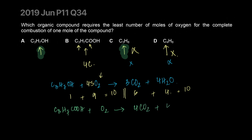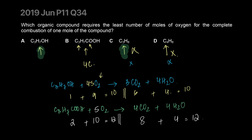Second equation: C3H7COOH produces four carbon dioxide and four water. That gives eight oxygen atoms from CO2 and four from water, total of twelve. You already have two oxygens in the molecule, so ten need to come from O2 - that's five moles of O2. So A requires fewer moles of oxygen - A is our correct answer.